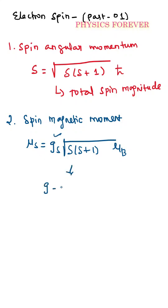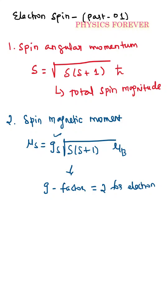The g-factor value for the electron is 2. For proton and neutron, note that gs applies. The other value we have to take is 2 for the electron. You have to remember that.